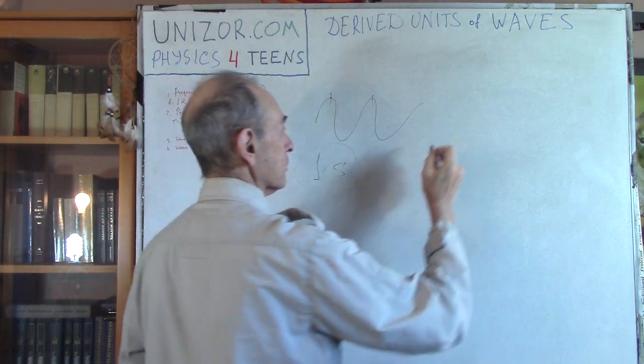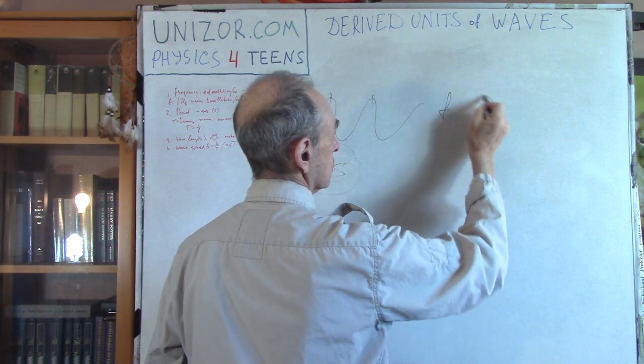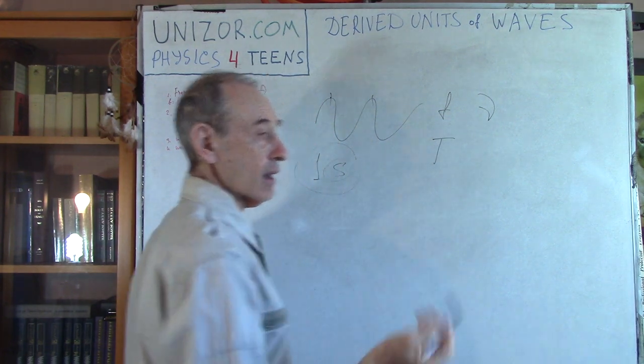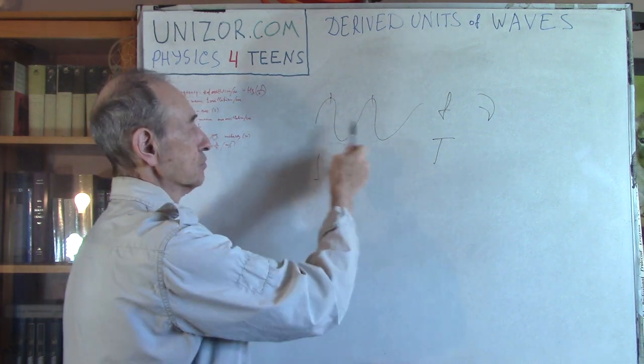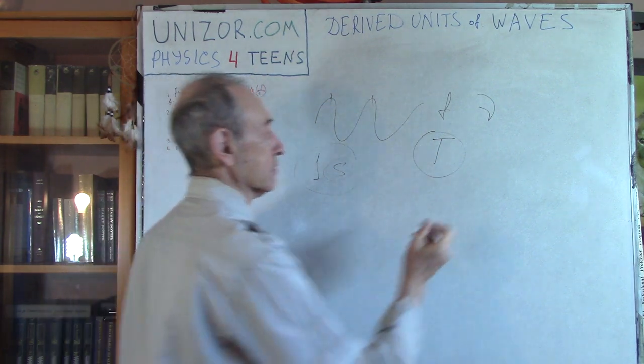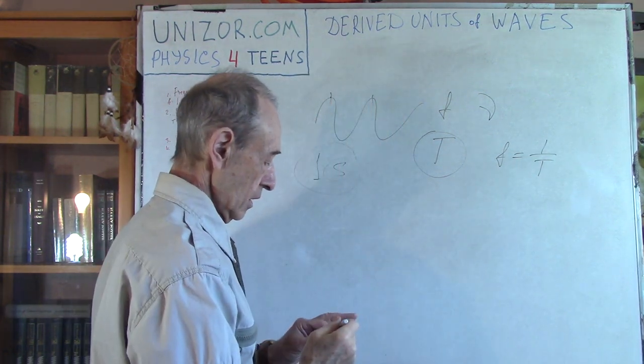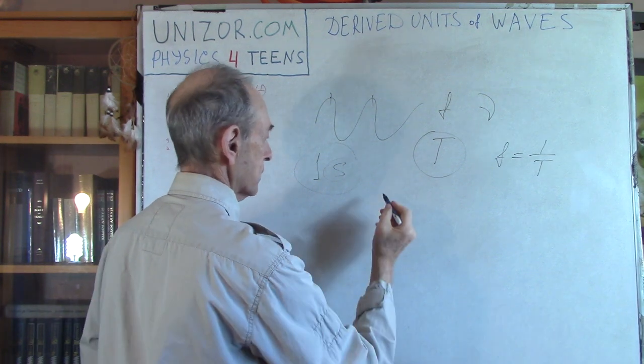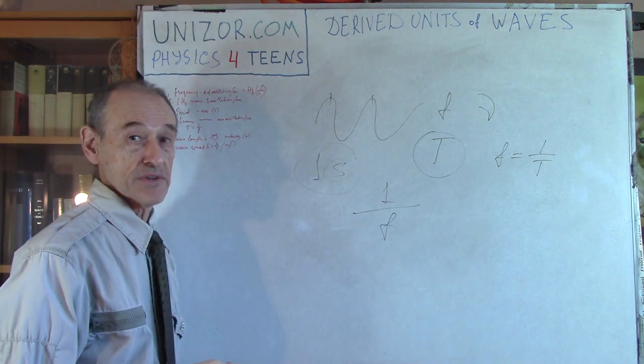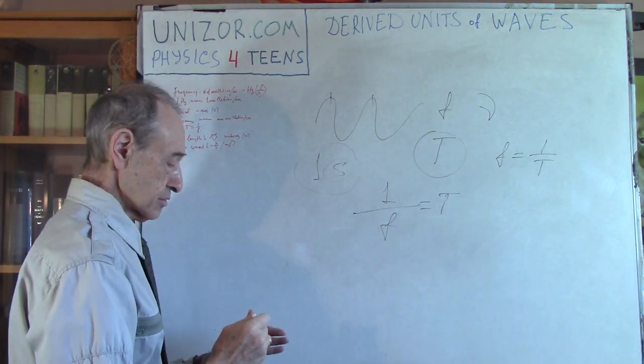Now obviously if you have a frequency, let's say using lowercase f, sometimes it's used greek nu, and period, which is usually a capital T, they are related. So if the time from peak to peak is T, then what's the frequency? Well frequency is obviously one over T. If it's one second divided by how many oscillations are per second, that gives you times that are inverse to each other.